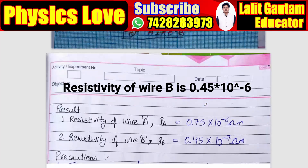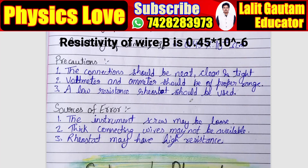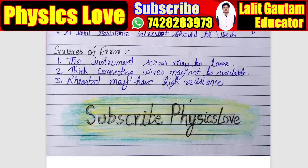Now this is the next page. On this page we have explained the result: resistivity of wire A, resistivity of wire B, precautions, and sources of error.